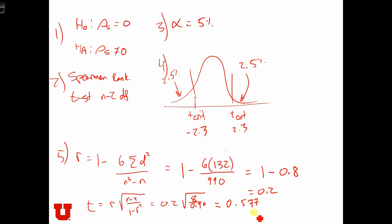So our t statistic is 0.577, which puts us just above the mean in the zone of acceptance. So based on this data, we don't see a significant relationship between population and air quality.